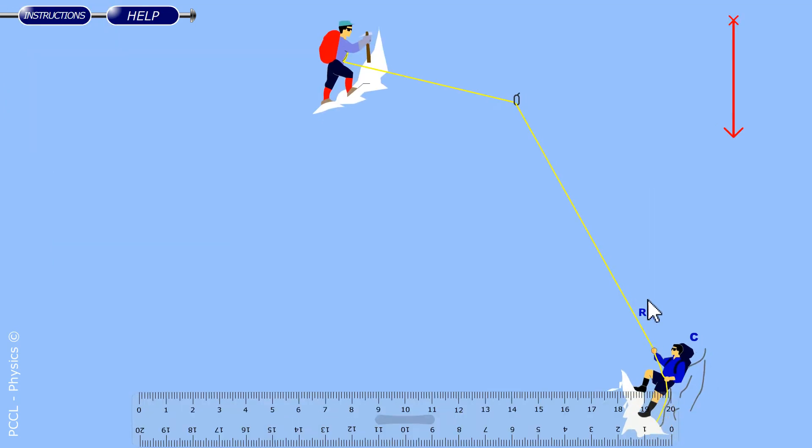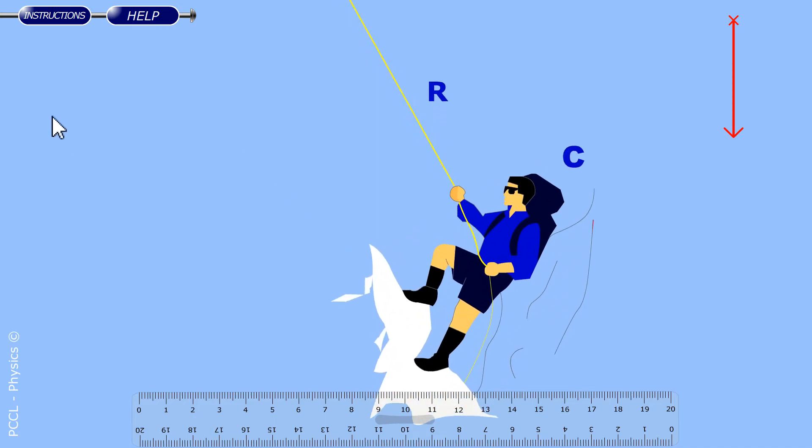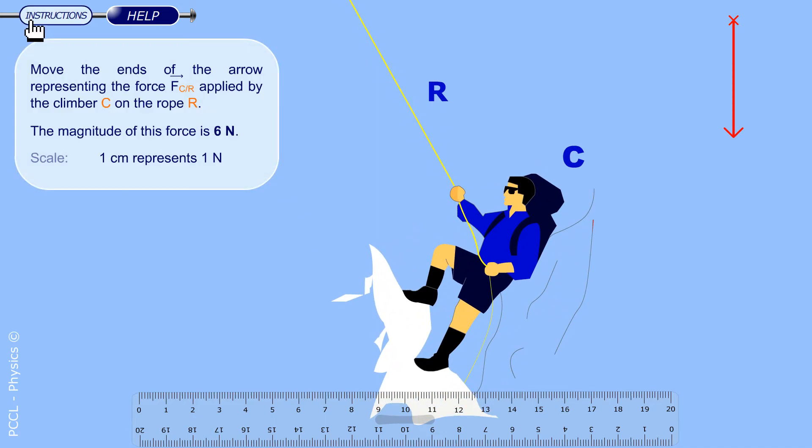Hello, in the following exercise we have a mountaineer second in line pulling on the rope. Not too much, just what it takes to keep the rope tight. I have to move the ends of the arrow to represent the force F applied by C on R, C for climber and R for rope.